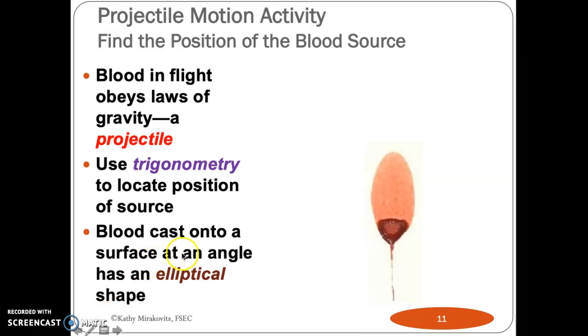So when blood hits a surface at an angle, instead of being perfectly round, it has an oval or an elliptical shape to it. And this is an example of a blood drop that has hit at an angle.